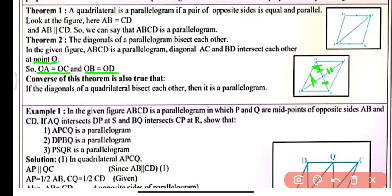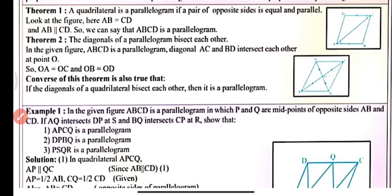The converse of this theorem is also true: if the diagonals of a quadrilateral bisect each other, then we can say it is a parallelogram. If any quadrilateral's diagonals bisect each other, then that quadrilateral is known as a parallelogram.